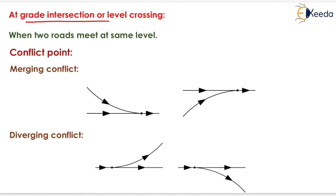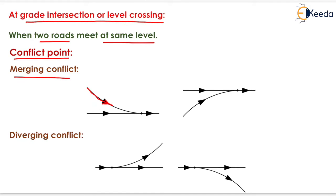The next type is the at-grade intersection or level crossing, where two roads meet at the same level. At such intersections, there are conflict points. Starting with the merging conflict: if one vehicle tries to merge from one road onto another road, one conflict point arises. Similarly, if a vehicle merges from another direction, another conflict point arises — these are known as merging conflicts.